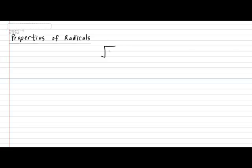You have the square root symbol, and inside the square root symbol you have either a number or a variable — let's just say X. There are two vocabulary words: the square root symbol itself is called a radical, and the object inside the radical has a special name — it is called the radicand. Get used to that word because I'll be using it quite often.